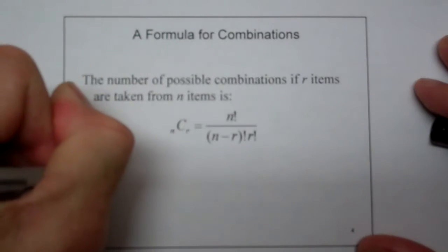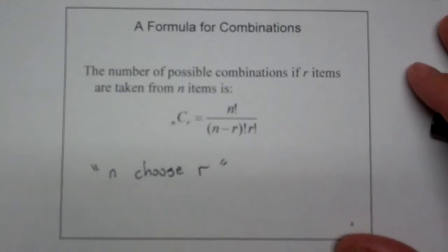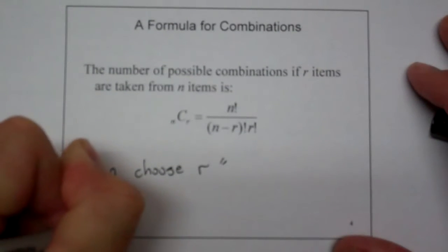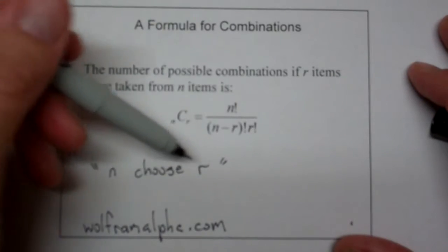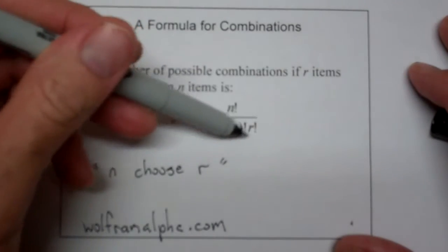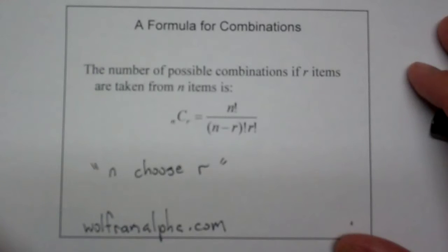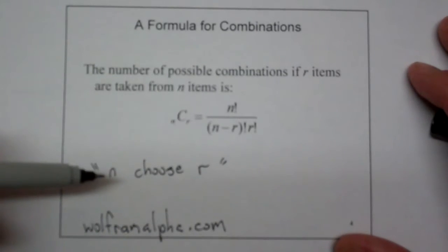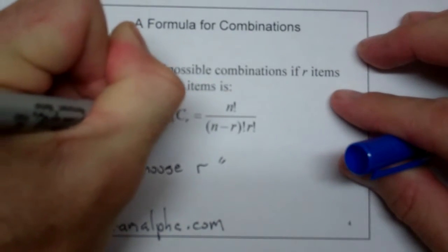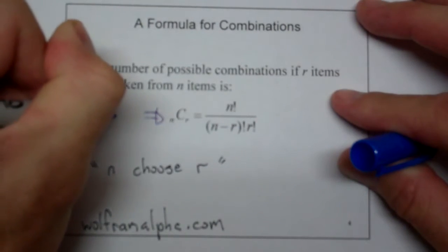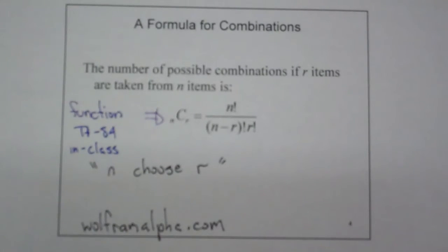This is often read as 'n choose r.' If you go to wolframalpha.com, you can put in something like 'five items choose three' and you will get the combinations formula to tell you how many of each thing you have — I actually double-checked all my slides with Wolfram Alpha. We're going to show you how to use this function and the permutation function in your calculator in class. There is a function on the TI-84, and we'll go over that in class, so don't forget to bring your 84.